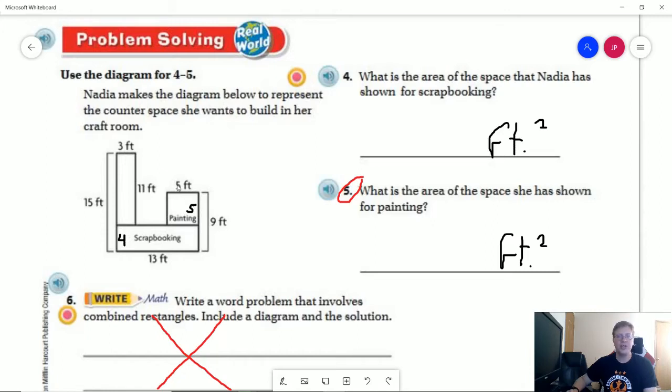So when we're working with number 5, we would have 5 times 5 which is going to give us 25 square feet. And for number 4, we would be doing 13 times 4 which is going to give us 52 square feet.